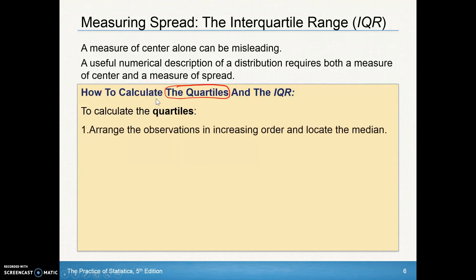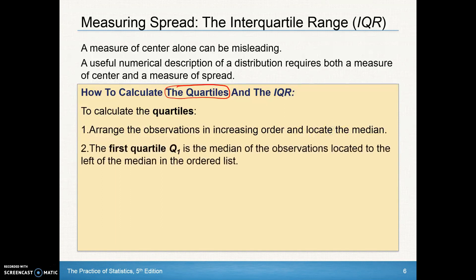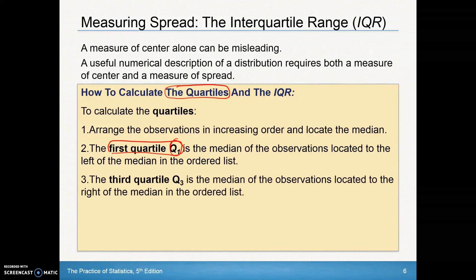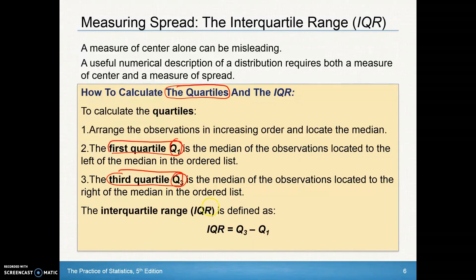To calculate quartiles, arrange the observations in increasing order and locate the median. The first quartile, Q1, is the median of the observations located to the left of the median, or the middle of the lower half. The third quartile, Q3, is the median of observations to the right of the median, or the median of the upper half. The interquartile range, IQR, is simply Q3 minus Q1.